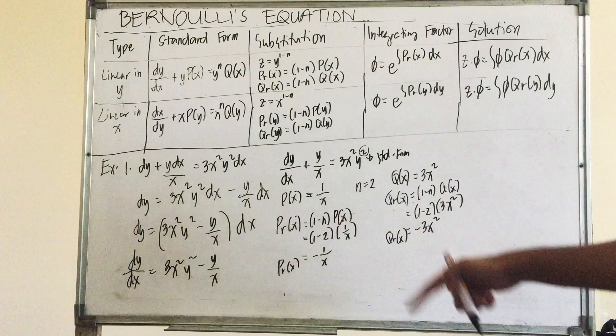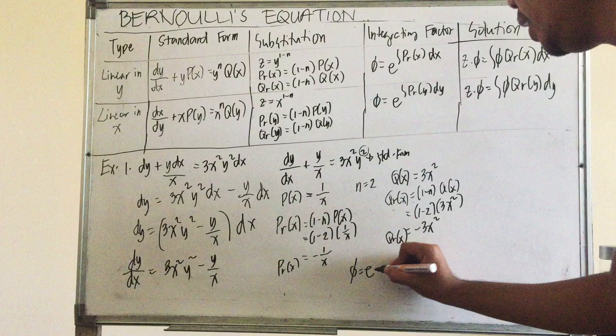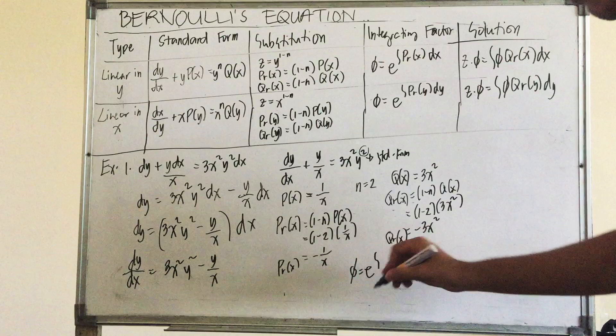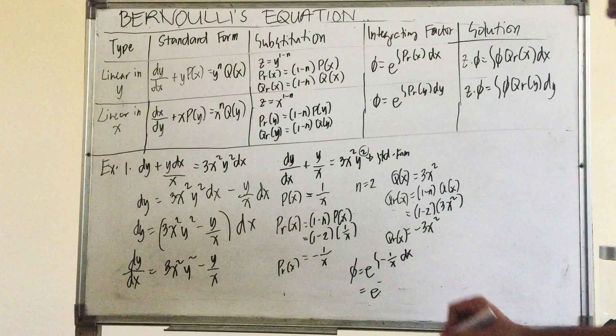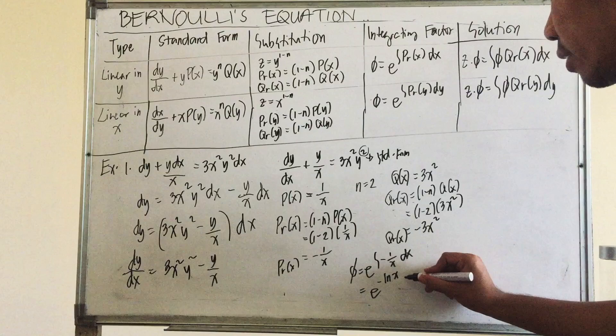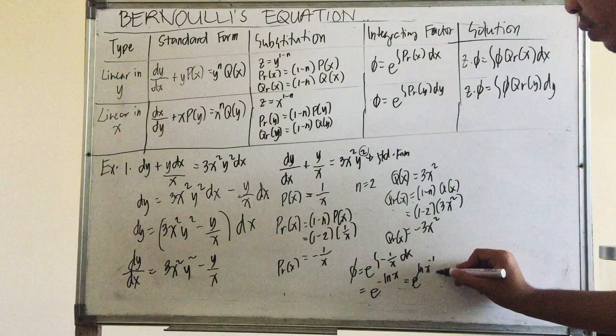After finding the values of p(x), pr(x), q(x), and qr(x), we can now solve for the integrating factor. The integrating factor equals e raised to the integral of pr(x) dx, which is e raised to the integral of negative 1 over x dx. The integral of dx over x equals ln x, so this becomes e raised to negative ln x, which equals e raised to ln x to the negative 1. Canceling e and ln, the integrating factor is x raised to negative 1.